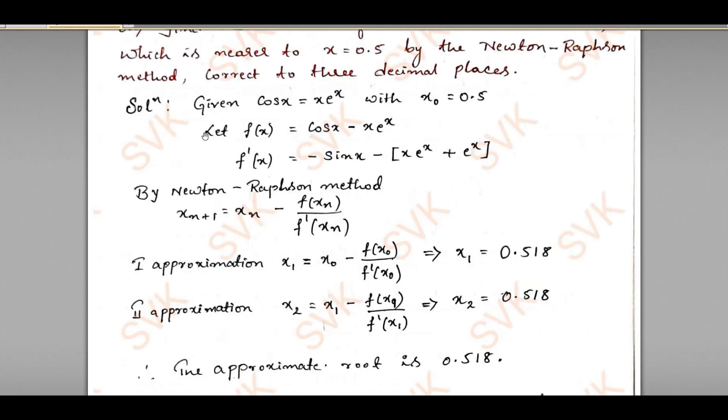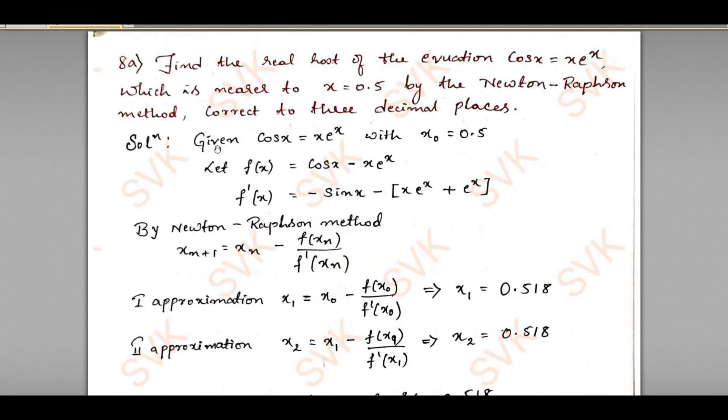The solution is: consider the given problem as cos x equal to xe^(4x), we need to find the real root for this equation. They have said that the root will be nearest to 0.5, so for that reason we have taken x₀ equal to 0.5. If they do not specify, we need to find the nearest root to that equation. Then I will define f(x) from that given equation: f(x) is nothing but cos x minus xe^(4x).